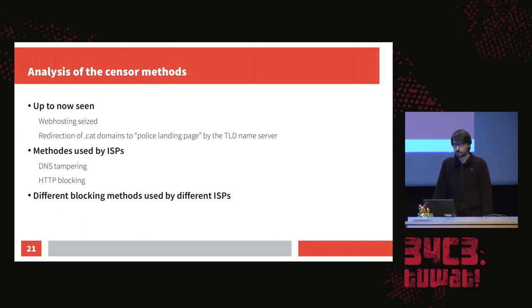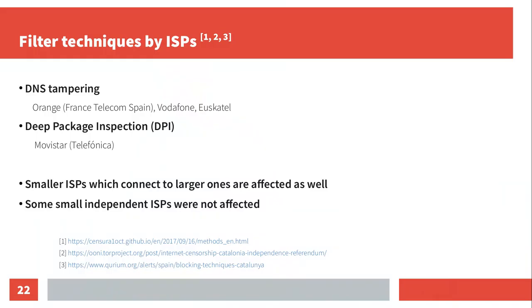Specifically, DNS tampering was used by France Telecom Spain, Vodafone, and Neuiscatel. The more sophisticated deep packet inspection was used by Telefonica, which is one of the biggest ISPs in Spain. Smaller ISPs which were connected to the larger ones were also affected. And interestingly, some small independent ISPs were not affected — it's not clear if the police forgot to send them a court warrant, or if they figured that with 90% of internet users unable to see the mirrors, they were fine.